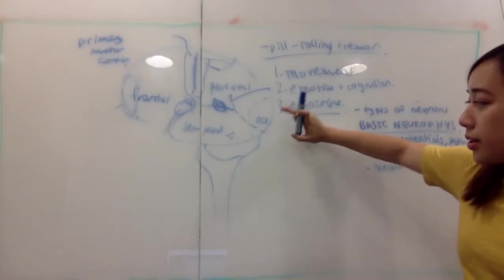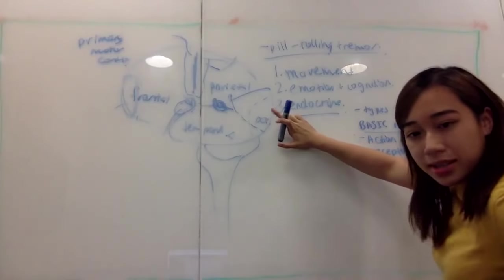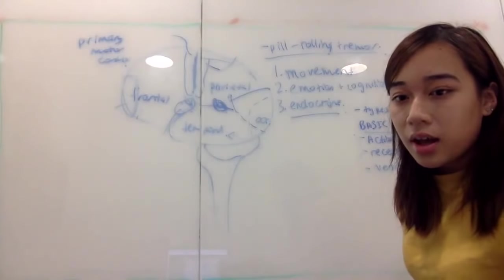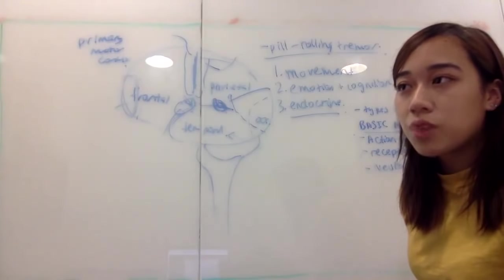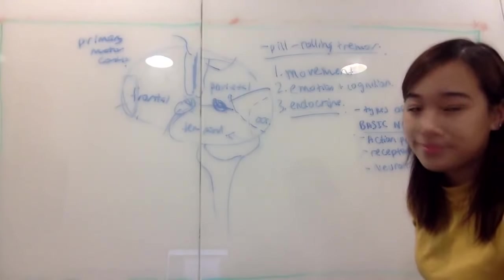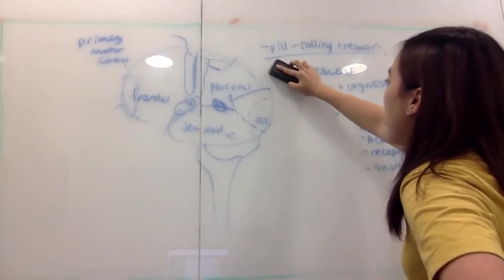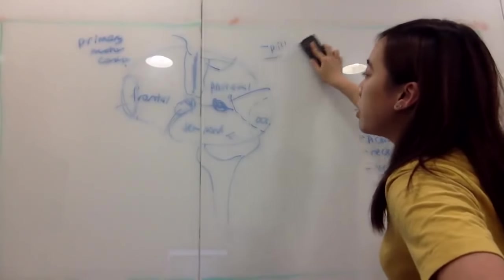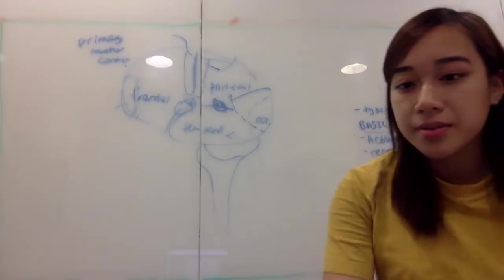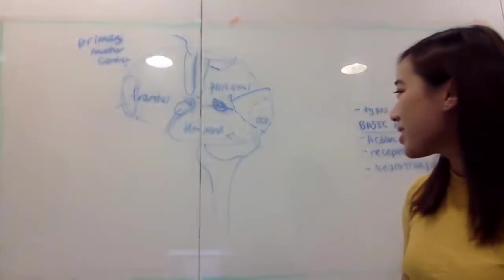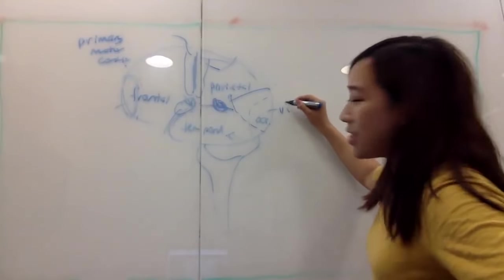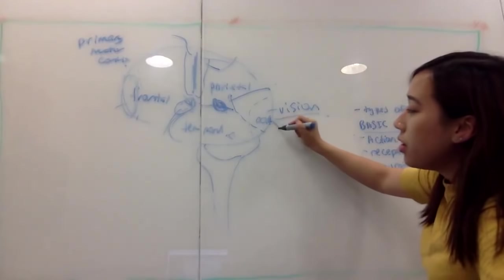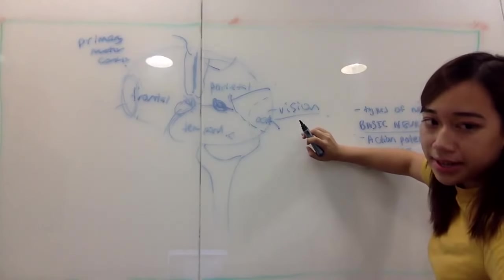Going back to the brain: the occipital lobe — what's that in charge of? Vision — that's correct. The reason is that in the very back you have the primary visual cortex. A good memory tip: there's a scene in the movie Dunkirk where somebody hits the back of their head and goes blind — that's why injuries to the back of the head can affect vision.